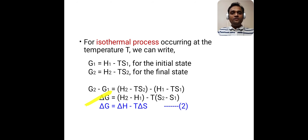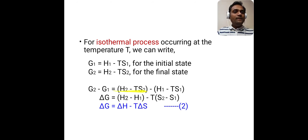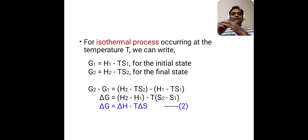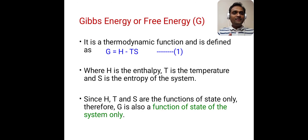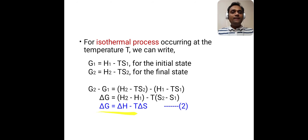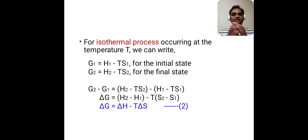Simplifying the brackets, we get delta G = (H2 - H1) - T(S2 - S1). Since H and S are state functions, H2 - H1 equals delta H and S2 - S1 equals delta S. Therefore, the change in Gibbs Free Energy for an isothermal process is: delta G = delta H minus T times delta S. Here, delta G is the change in Gibbs Free Energy, delta H is the change in enthalpy, and delta S is the change in entropy of the system.